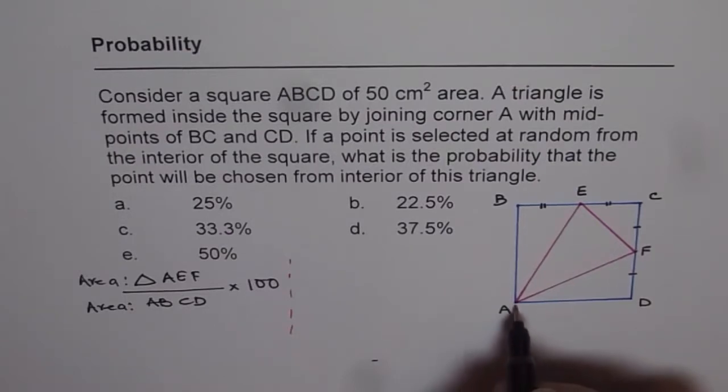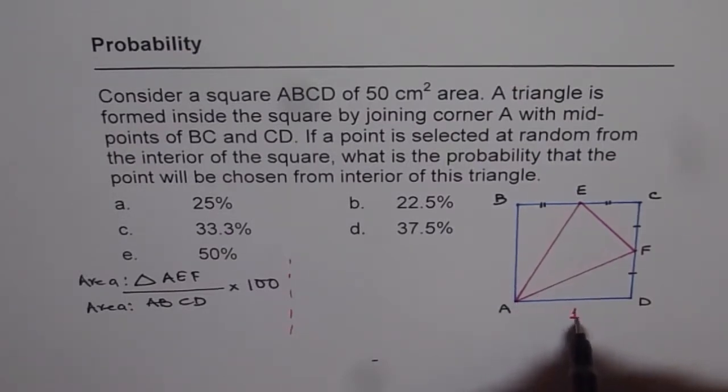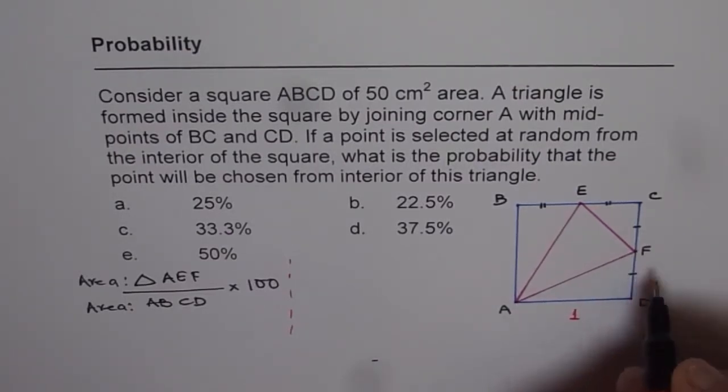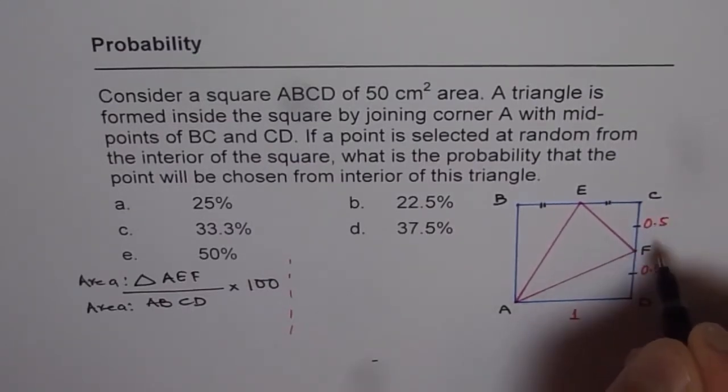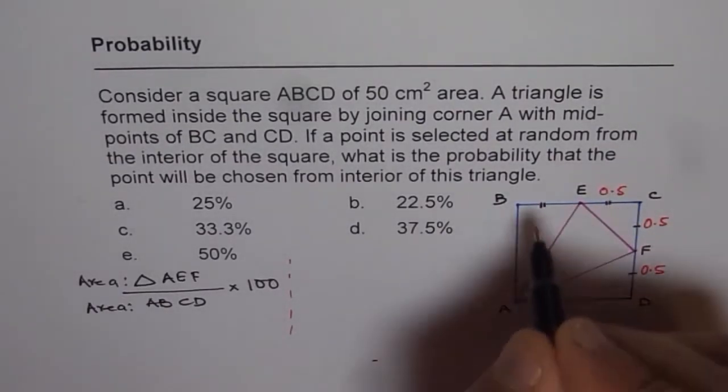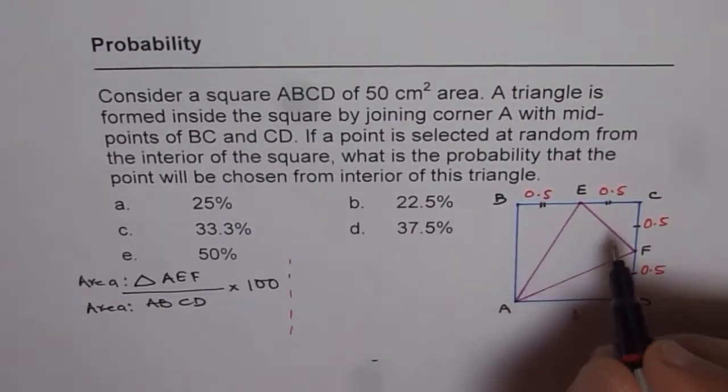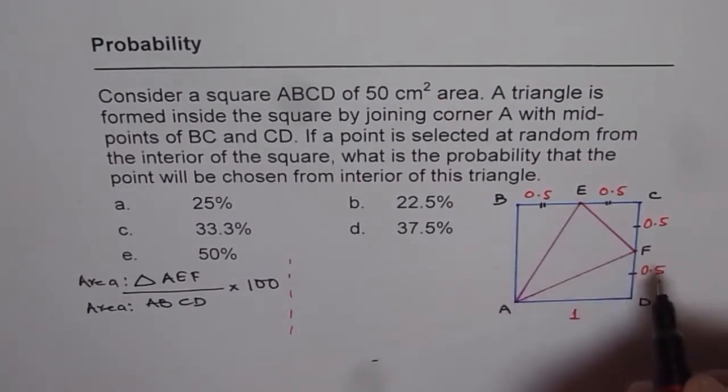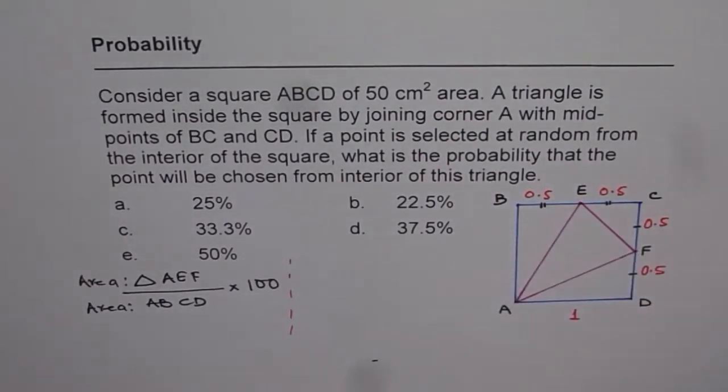Let us assume that AD is 1. In that case, the midpoint will be half. Or let me write 0.5 and this will be also 0.5. And here also we have 0.5. So these are our dimensions since E and F are midpoints.